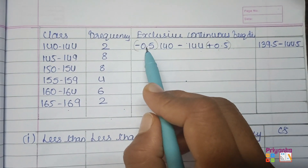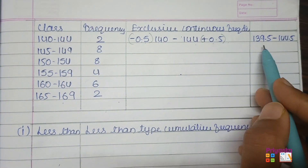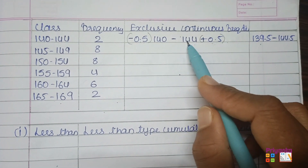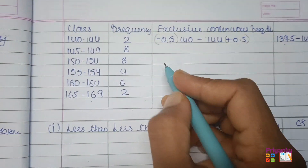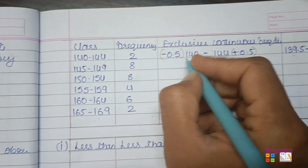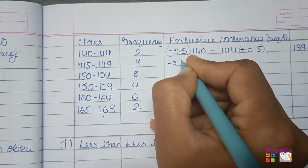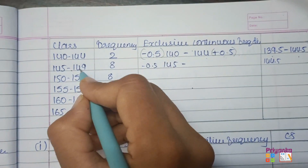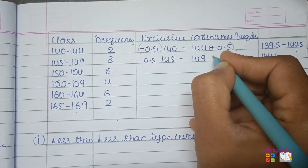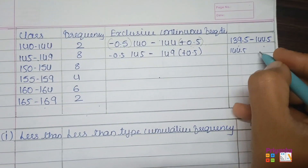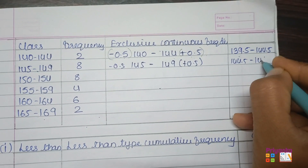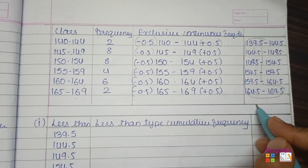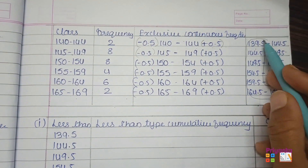To convert inclusive to exclusive frequency distribution, subtract 0.5 from the lower boundary and add 0.5 to the upper boundary. So 140 minus 0.5 gives 139.5, and 144 plus 0.5 gives 144.5. Continuing: 145 minus 0.5 gives 144.5, and 149 plus 0.5 gives 149.5. After continuing with the remaining classes, the exclusive continuous frequency distribution is ready.